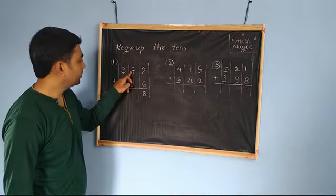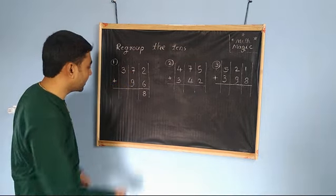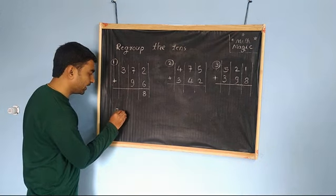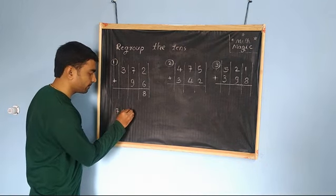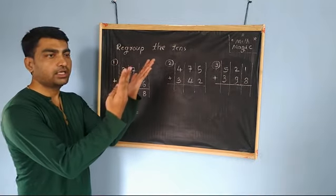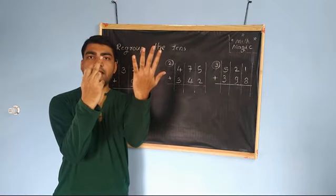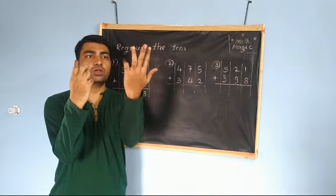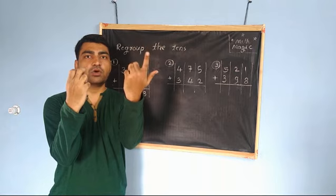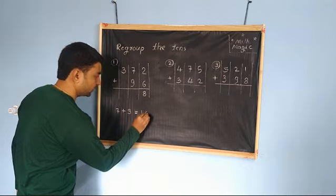The next digits are 7 and 9. If we add 7 and 9, we get a 2-digit number. After 9, we have to count 7 fingers. After 9, there is 10, 11, 12, 13, 14, 15, 16. So the answer is 16.